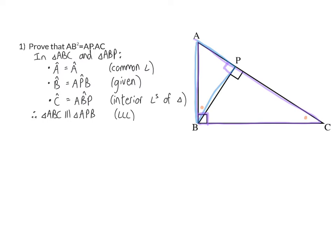And from here, we now need to find the correct pairs of ratios. So we will have AB over AP is equal to AC over AB. Our reason is similar triangles. And when we now cross multiply, I will have AB squared is equal to AC times AP.